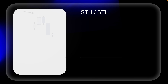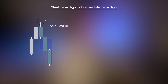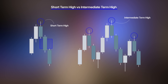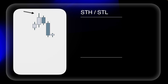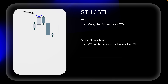Short-term highs and short-term lows: a short-term high is simply a swing high, but the difference from an intermediate high is that this short-term high does not have swing highs lower to the left and lower to the right of it. A huge and important difference is that a short-term high leaves behind a fair value gap — so a short-term high is a swing high followed by an FVG.